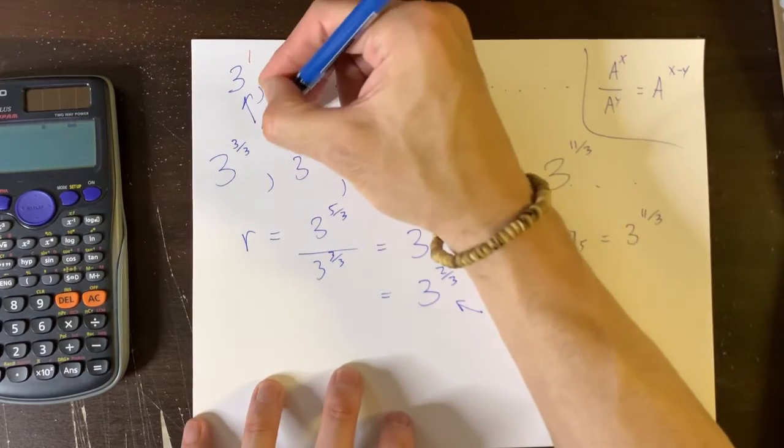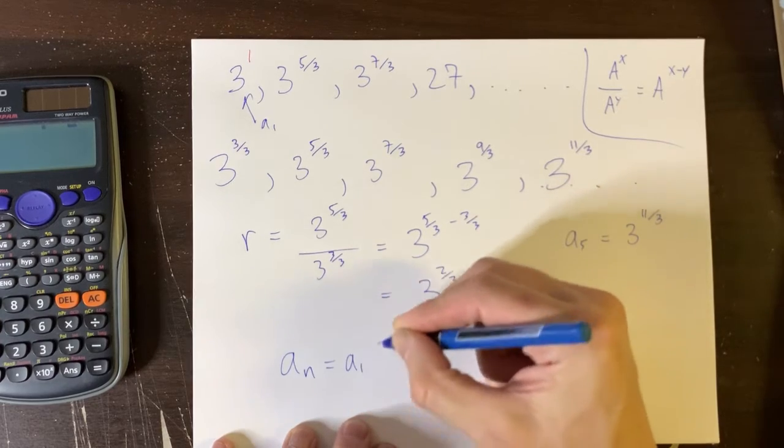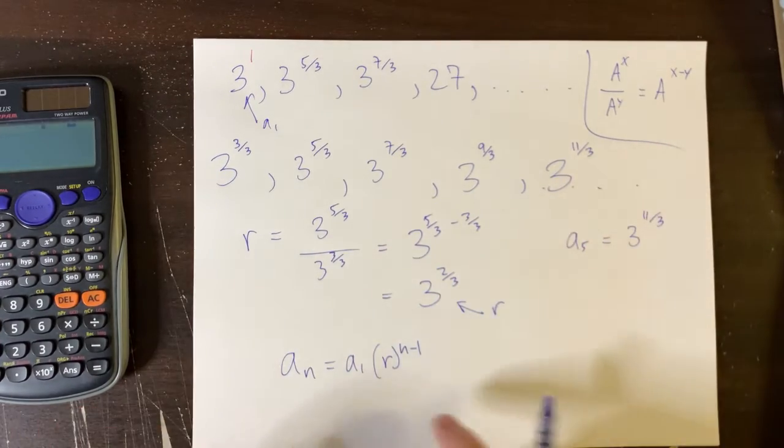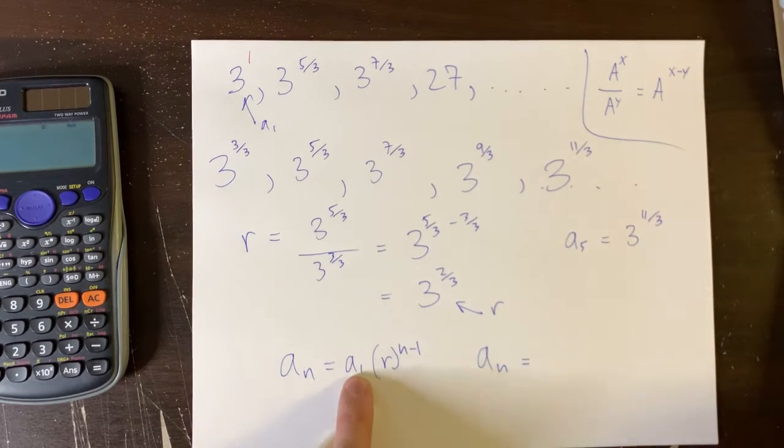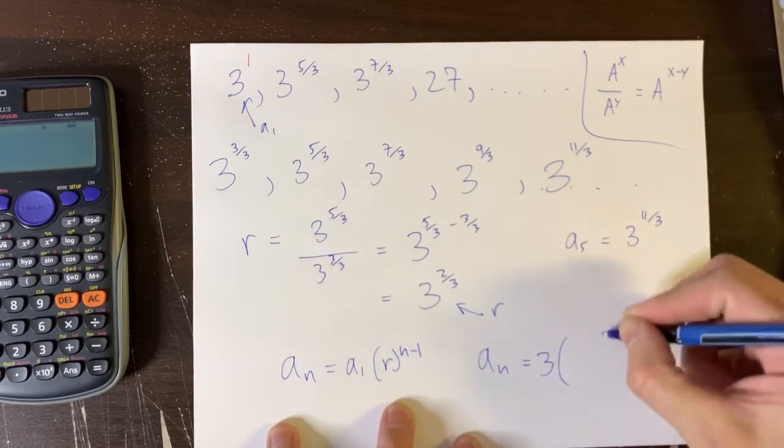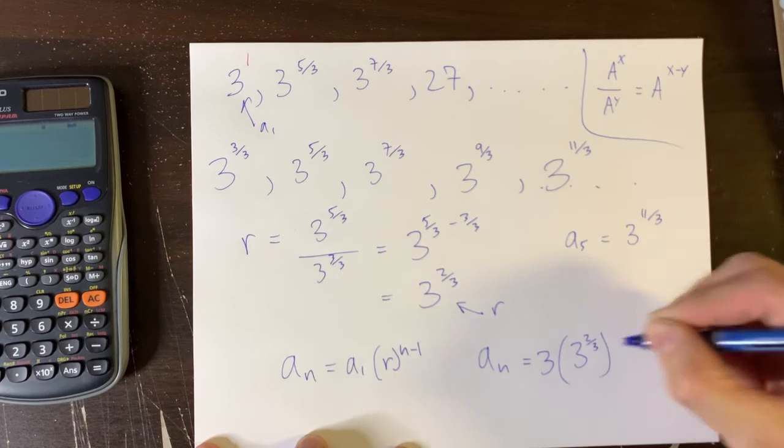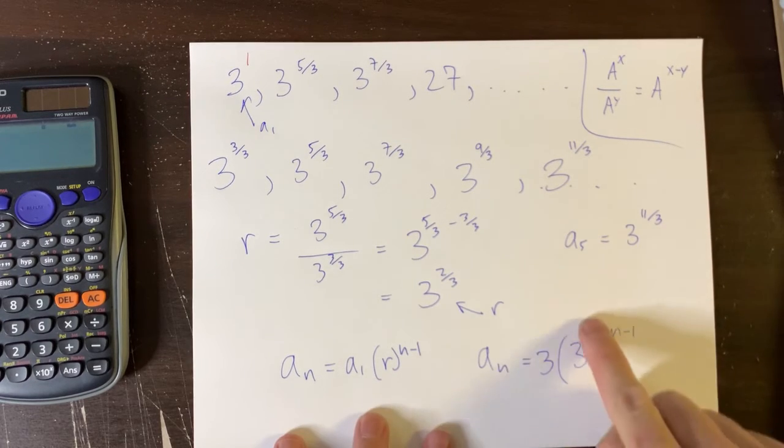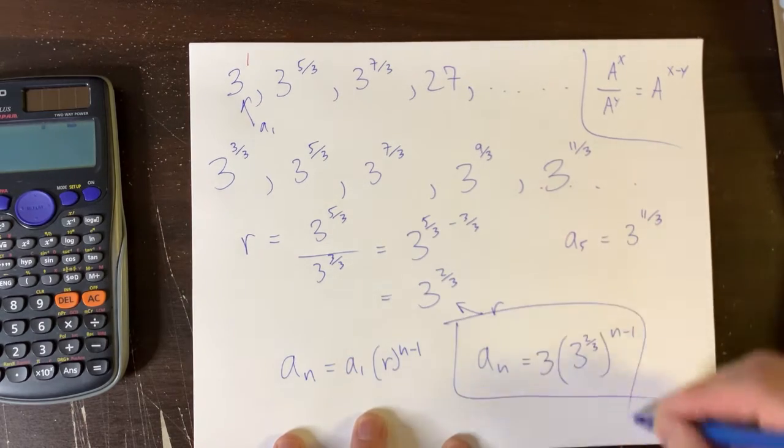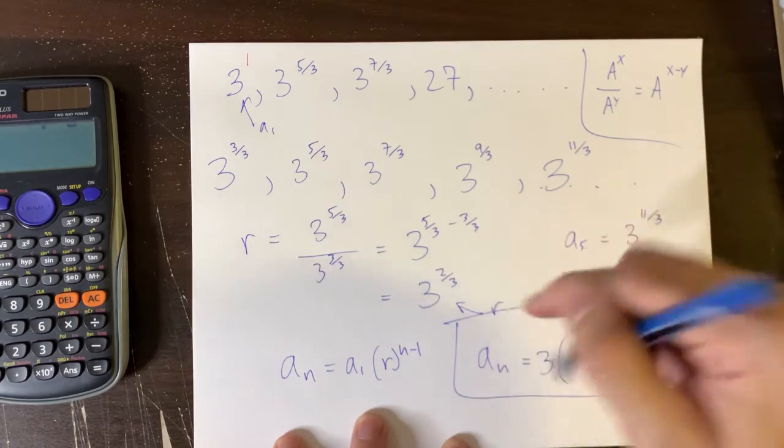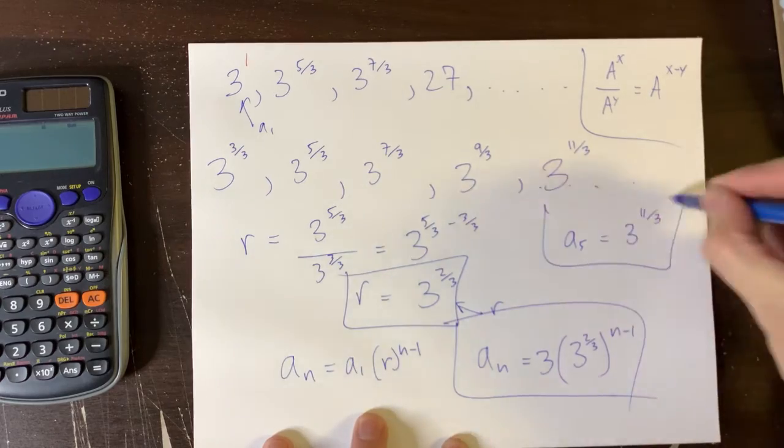And you know what your first term is, A1. And so our general rule, our general formula, which says this, can now be completed. AN is just the name of the formula. The first term was 3. Our common ratio was discovered. It's 3 to the power of 2 thirds. And the exponent stays N minus 1. Again, this can be rewritten with radicals and many different ways. But you know what? This is fine. This is the nth term. It's your formula. This is your common ratio. If they want the common ratio, there it is. And this is the fifth term.